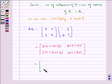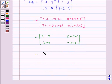Which is equal to 2 minus 8, 6 plus 20, 3 minus 4, 9 plus 10. Which is equal to 2 minus 8 minus 6, 20 plus 6, 26, 3 minus 4 minus 1, 9 plus 10, 19.